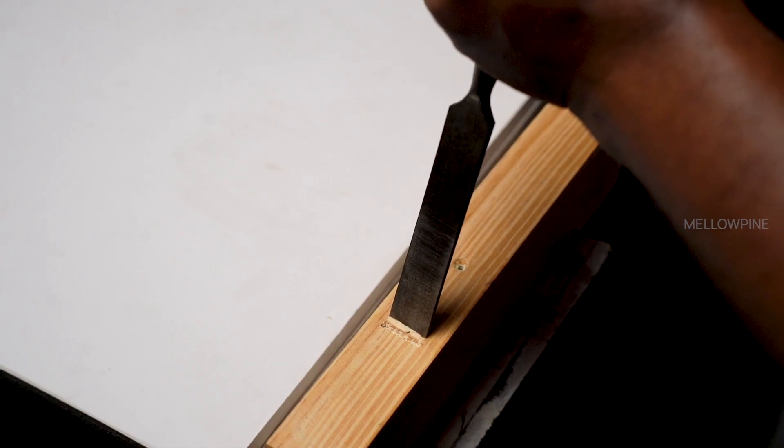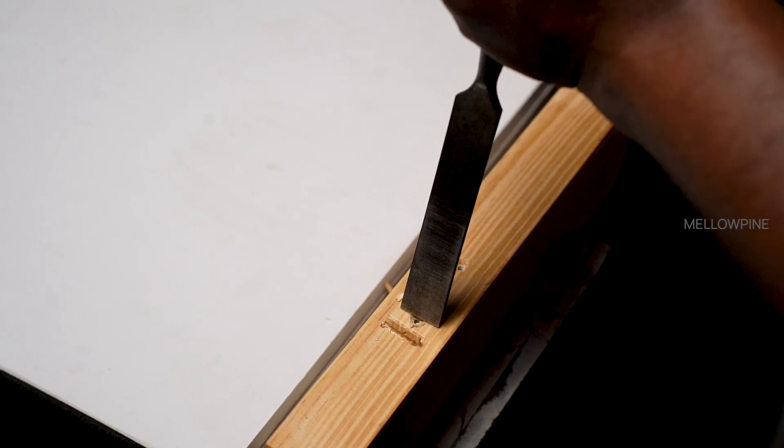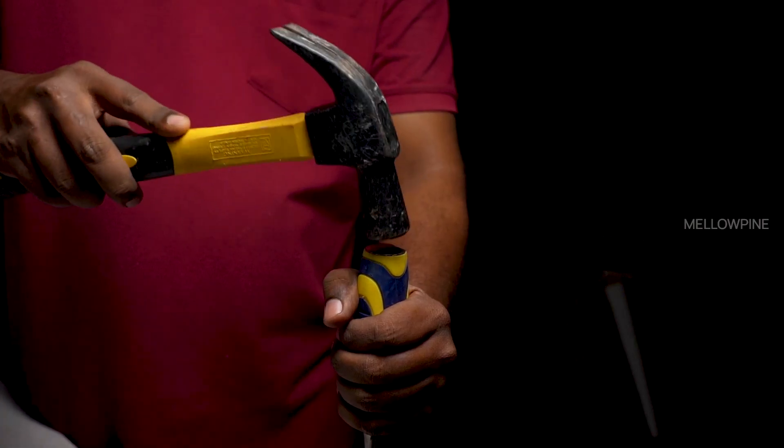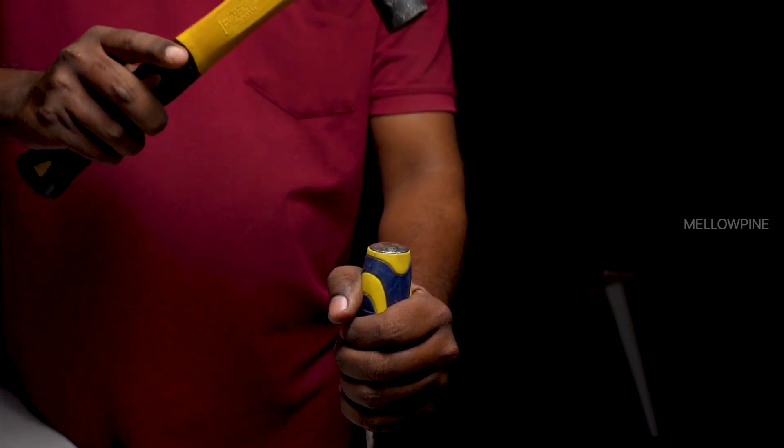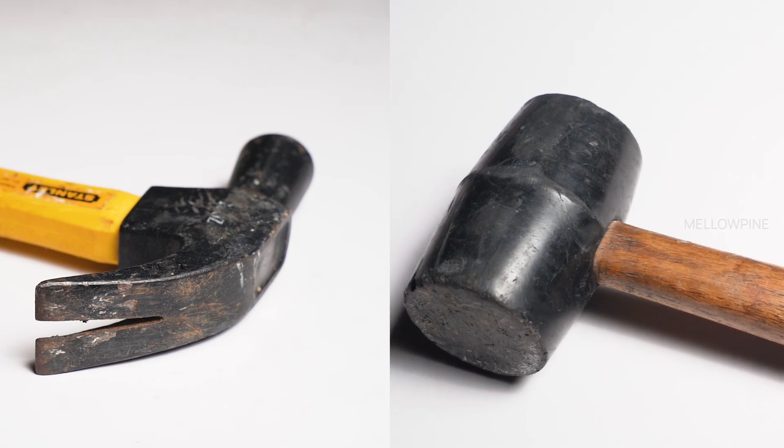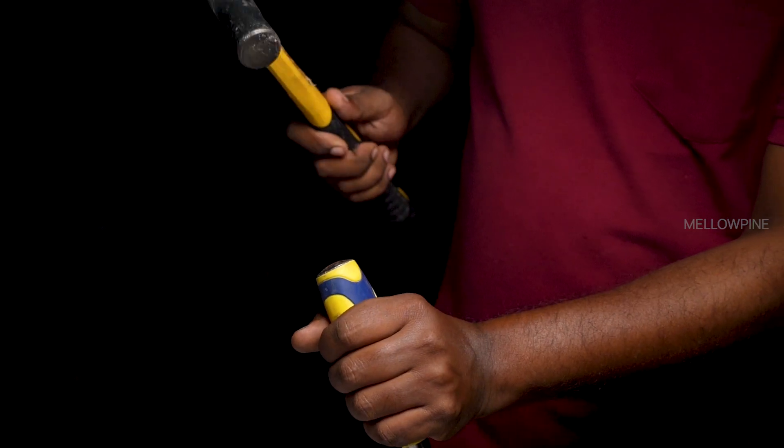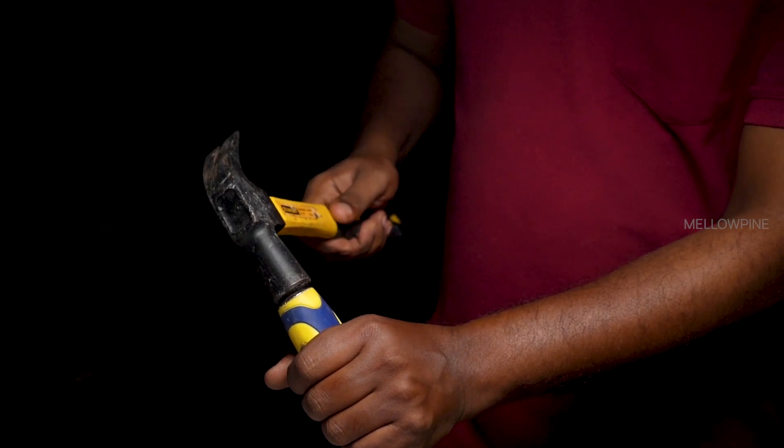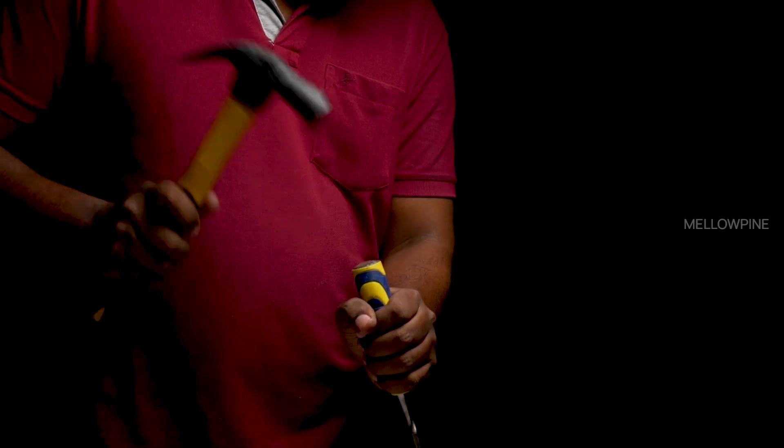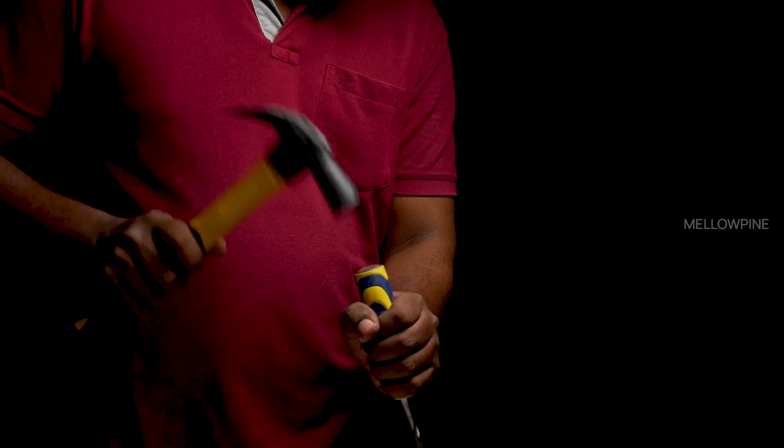Position the chisel's beveled edge against the wood, aligning it with the desired cutting line. It's crucial to start with light pressure to ensure you have control over the chisel's movement. Using a mallet or hammer, gently tap the chisel's handle to start the cut. Remember to apply consistent pressure to maintain control and avoid striking too forcefully, as it can damage the wood or cause the chisel to slip.